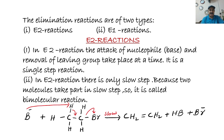Point two: in an E2 reaction there is only one step, and that is the slow step. Because two molecules take part in the slow step, it is called a bimolecular reaction. The base removes hydrogen from the beta carbon, and Br⁻ is removed as the leaving group.